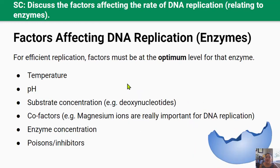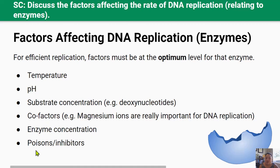Because enzymes are involved in each step of DNA replication, the rate of DNA replication is dependent on the factors affecting enzyme action. Because DNA replication is an important part of the cell cycle, these factors also affect the cell cycle and therefore the ability of the cell to repair itself and grow. If DNA replication stops, the whole cell cycle and growing stops as well. DNA replication occurs most efficiently when all relevant factors are at their optimum level, and small changes from the optimum may result in small changes in the rate of efficiency. The factors to consider are: temperature, pH, substrate concentration, cofactors, enzyme concentration, and poisons and inhibitors.